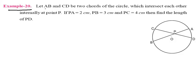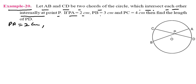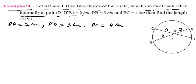Example 20: Let A, B and C, D be two chords of a circle which intersect each other internally at point P. PA equals 2 centimeters, PB equals 3 centimeters, PC equals 4 centimeters. Find the length of PD.